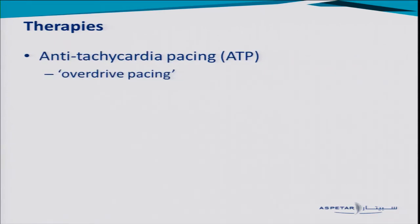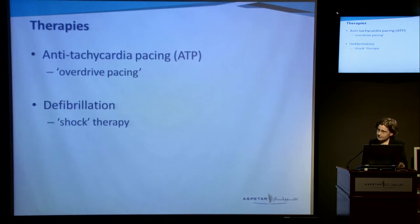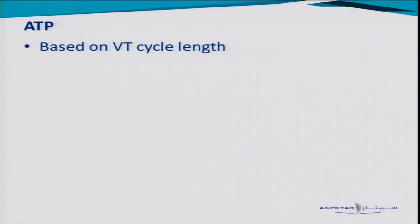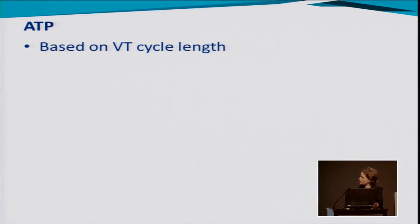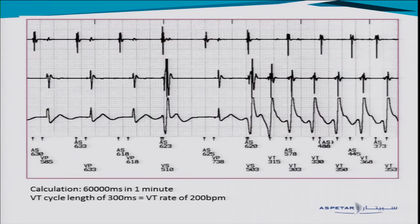The ICD doesn't just shock the heart — there are two different therapies it can deliver. The first is called anti-tachycardia pacing, or ATP, also known as overdrive pacing. The second, more commonly known therapy is the actual shock itself. Anti-tachycardia pacing is based on the ventricular tachycardia cycle length — essentially the heart rate when the heart goes into VT. Here you can see a printout from a patient who goes into VT: they're in sinus rhythm with a cycle length of 630 milliseconds, then the patient goes into VT and the cycle length is 300 milliseconds — a VT heart rate of 200 beats per minute.